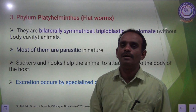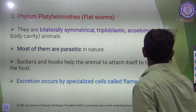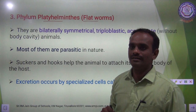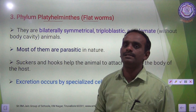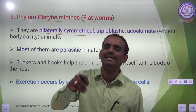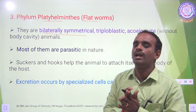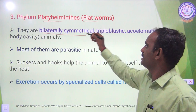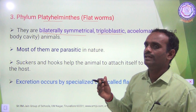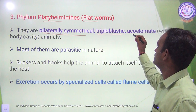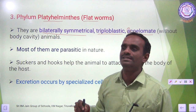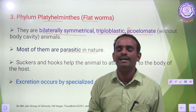We now move on to Phylum Platyhelminthes — platyhelminthes means flatworm. The organisms under Phylum Platyhelminthes are bilaterally symmetrical — meaning if we cut the body parts through the central axis, we can get only two identical halves. They are triploblastic, with three germ layers: ectoderm, endoderm, and mesoderm. They are acoelomate — meaning absence of body cavity — and most of them are parasitic, depending on a host organism for food.